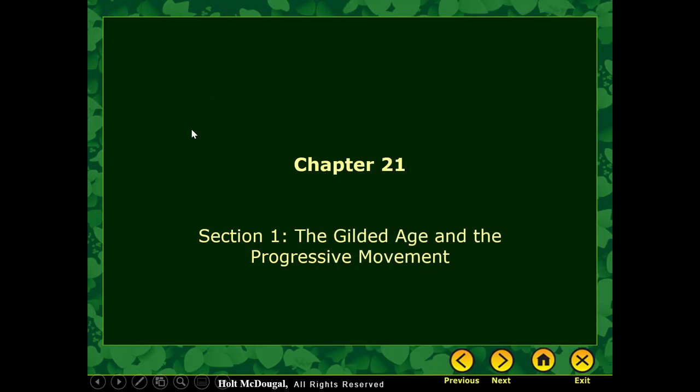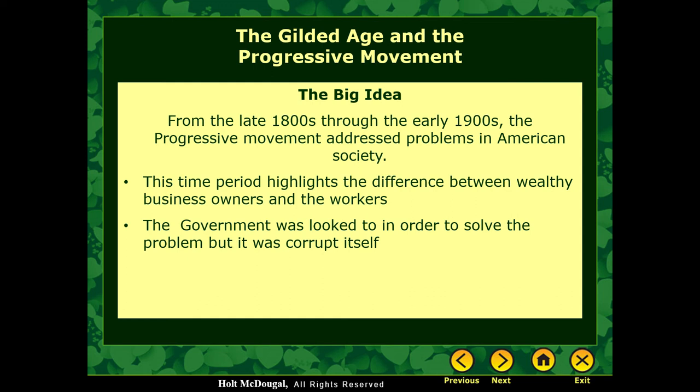For this lesson we're going to talk about Chapter 1, Section 1: the Gilded Age and the Progressive Movement. The big idea here is that from the late 1800s to the early 1900s, the Progressive Movement addressed problems in American society.